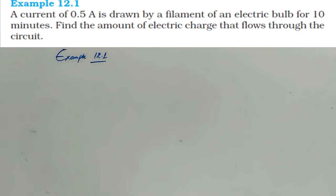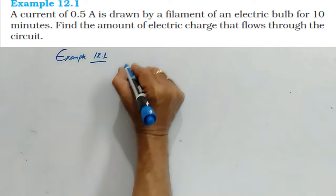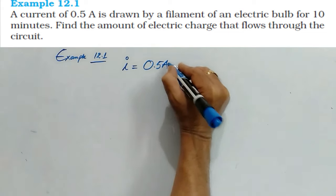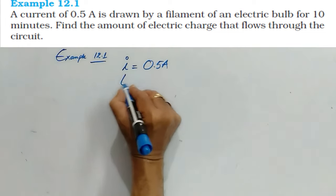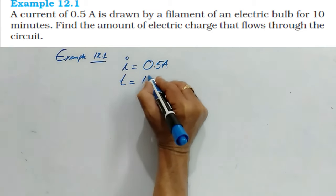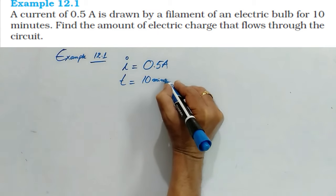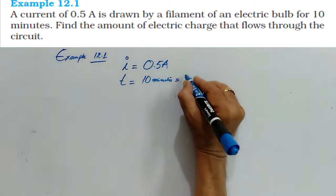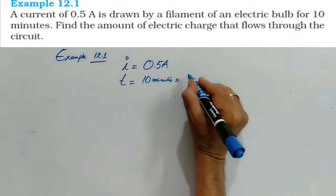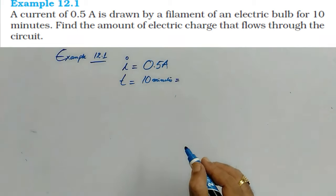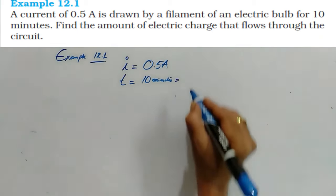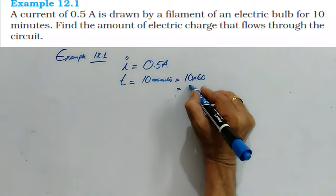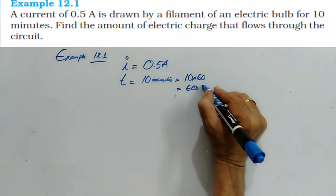In this problem the current i is given as 0.5 amperes, the time t is given as 10 minutes. We should maintain the units in only one system, therefore we need to convert this into seconds to get the final answer in SI units. So 10 should be multiplied by 60 which gives us 600 seconds.